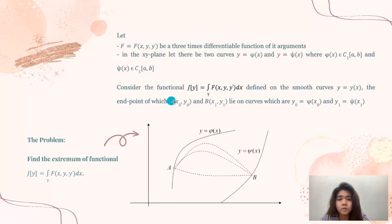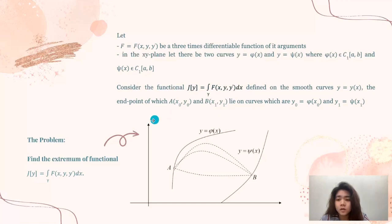We consider the functional J[y] equals the integral of f(x, y, y') defined on smooth curves y equals y(x), with endpoints at (x0, y0) and (x1, y1), lying on curves y0 equals v(x0) and y1 equals sin(x1). The problem is to find the extremum of functional J[y] equals the integral along gamma of f(x, y, y') dx.